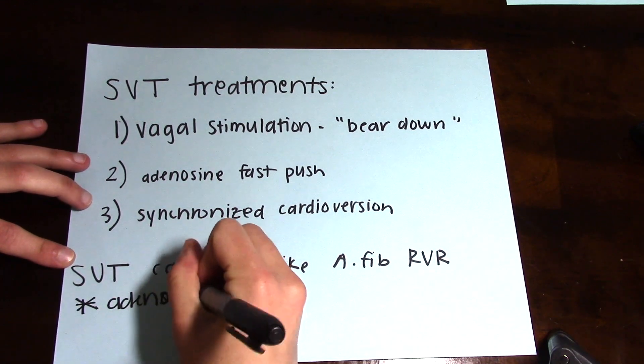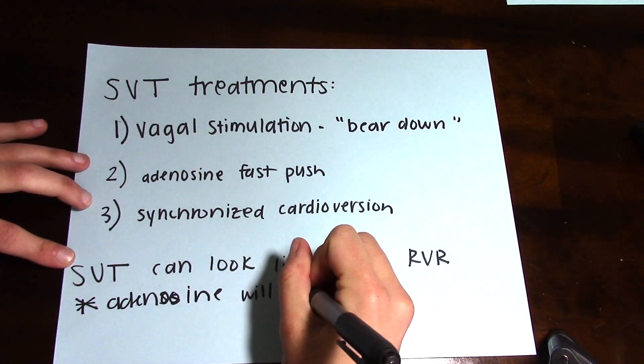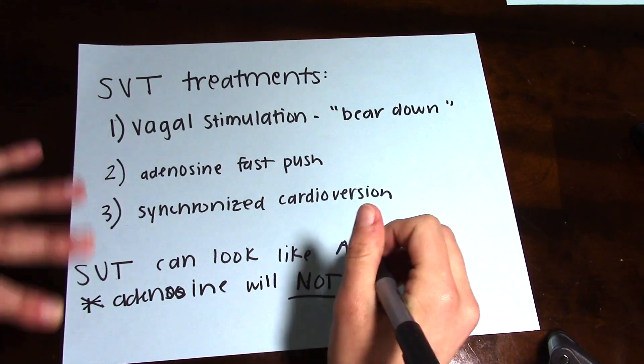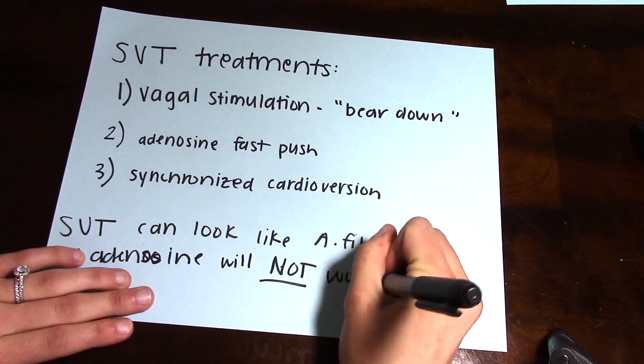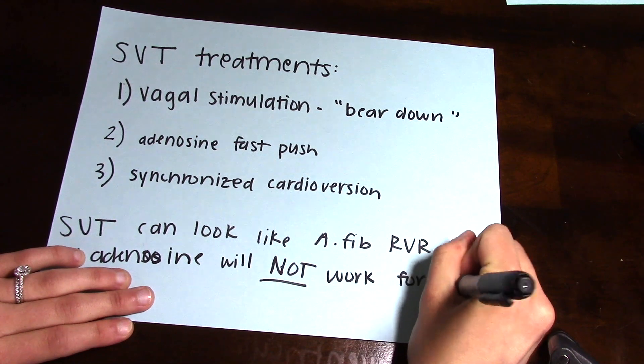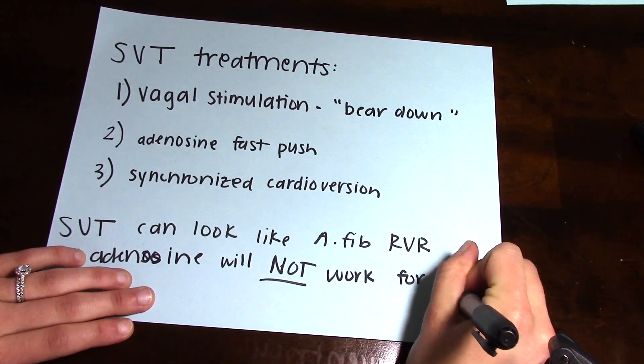A lot of times we will try adenosine on AFib RVR if we're not sure if it's SVT or AFib RVR, but adenosine will not work for AFib RVR. It'll go right back to the high rhythm rate that it's at.